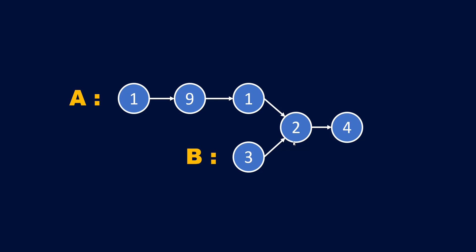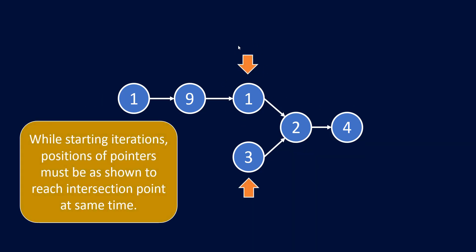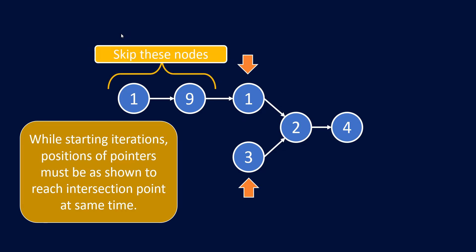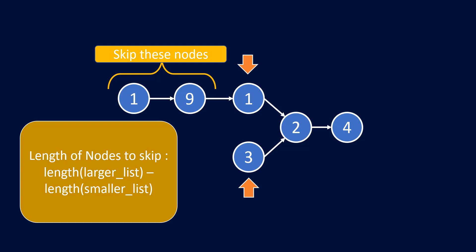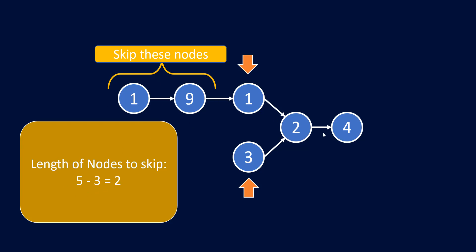So what do we need to do for that? In list A, we need to start iterating from a certain node and skip the starting nodes of the longer list. How do we find how many nodes to skip? That would be given by the difference of the lengths of the two lists. In this example, the difference is 2 — list A has 5 nodes and list B has 3 nodes, so 5 minus 3 equals 2. We skip those two nodes and start from the third node in the larger list and from the starting node in the smaller list in order to reach the intersection node at the same time.